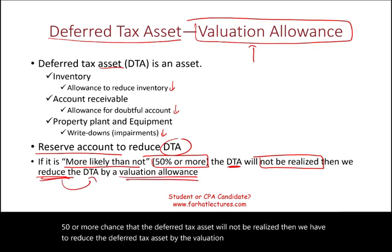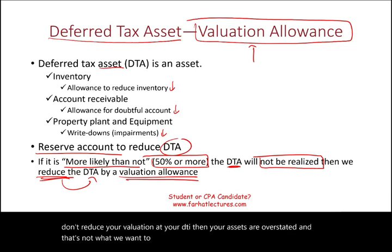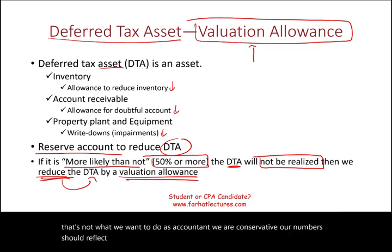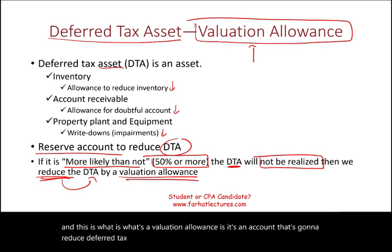Simply put, if you don't reduce the valuation of your DTA, then your assets are overstated, and that's not what we want. As accountants, we are conservative — our numbers should reflect reality. The valuation allowance is an account that's going to reduce deferred tax asset when needed.